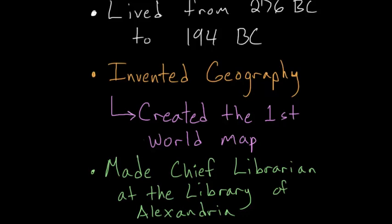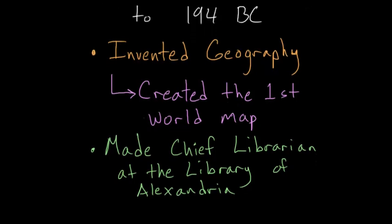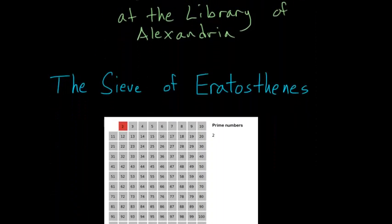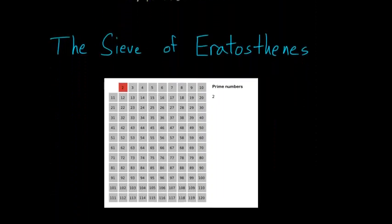But when you look at Eratosthenes' mathematical accomplishments, he's famous for two results, one being finding the circumference around the world. But the other is what's known as the sieve of Eratosthenes. And this sieve is a very simple method that allows you to find prime numbers. And I'll briefly explain how it works.